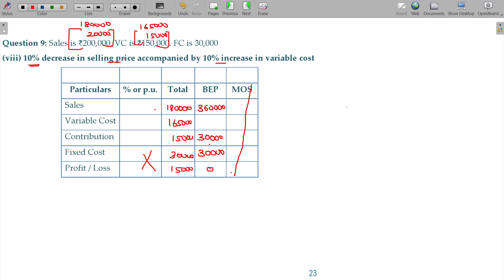Now, what about your PVR? PVR is equal to contribution divided by sales into 100. You can take contribution 15,000 and sales for the total being 1,80,000. Your PVR percentage being 15,000 divided by 1,80,000 rupees.